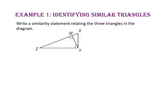In example 1, we will identify similar triangles. Write a similarity statement relating the three triangles in the diagram. Since we know the similarity statements have to be written in corresponding order, let's start by drawing the three triangles oriented the same way. We'll begin with the large triangle, triangle X, Y, Z, and redraw it.